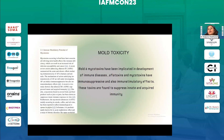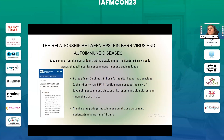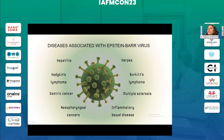Mold toxicity is also one of the underlying causes for autoimmunity — it releases aflatoxins and mycotoxins which have immunosuppressive and stimulatory effects. EBV (Epstein-Barr virus) is another very important infection, mostly going undiagnosed; during COVID times there has been exacerbation of EBV and it has been very closely associated with Hashimoto's. Common conditions associated with EBV infection include hepatitis, Hodgkin's disease, gastric cancers, nasopharyngeal cancers, inflammatory bowel disease, multiple sclerosis, Burkitt's lymphoma, and others.